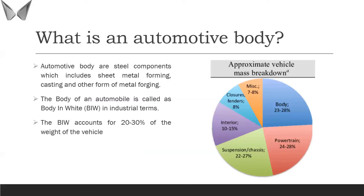Today's topic is BIW, which stands for Body in White. We'll discuss why it's called that in the next slide. An automotive body is not just a sheet metal component consisting only of metal — everybody used to think that way, but it also includes plastic components and sealer components, which are fluids used for bonding and extra stiffness.